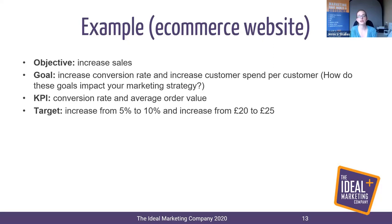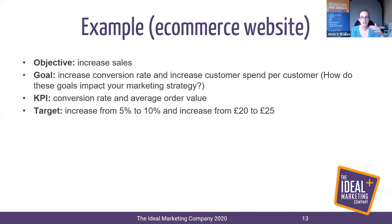To increase customer spend per customer, you might bundle products together, offer free postage over a particular order value — say your average order value is £35 and you want to get it to £50, so give free shipping over £50, or bundle products at over £50 with a discount. For repeat buyers, do email marketing to follow up after a certain amount of time with a coupon code to come back or to refer you.